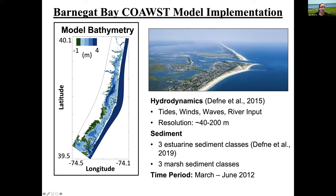As an introduction to Barnegat Bay: it is bordered on its oceanward side by two long barrier islands and characterized by two inlets — Little Egg Inlet in the south and Barnegat Inlet in the center. The green areas are marshes, with large marshes in the southern portion of the bay and smaller, patchier marshes in the northern portion. The bathymetry is pretty shallow, only a couple meters deep, and the location of these channels and inlets will be important throughout the talk.